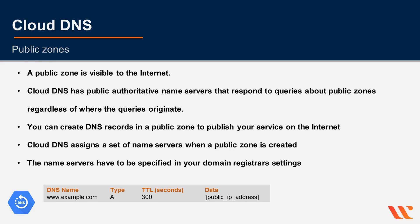A public zone is visible to the internet. Cloud DNS has public authoritative name servers that respond to queries about public zones regardless of where the queries originate. Cloud DNS assigns a set of DNS name servers when a public zone is created. You can create DNS records in a public zone to publish your service on the internet, and the name servers must be specified in your domain registrar settings. For example, you can create an A record for www.example.com with a TTL of 300 and a public IP address.